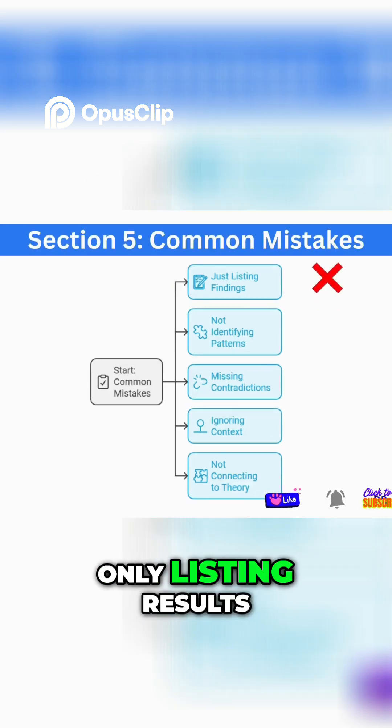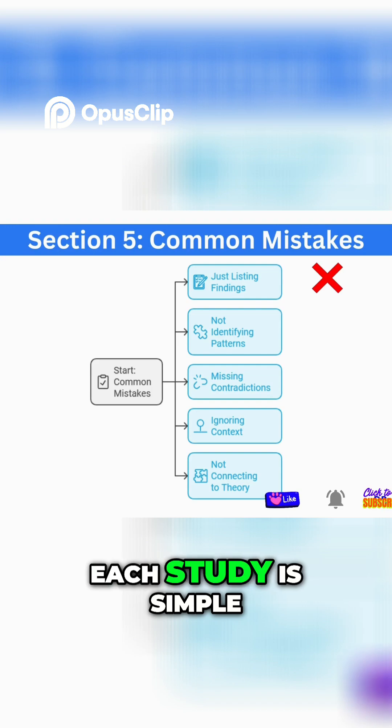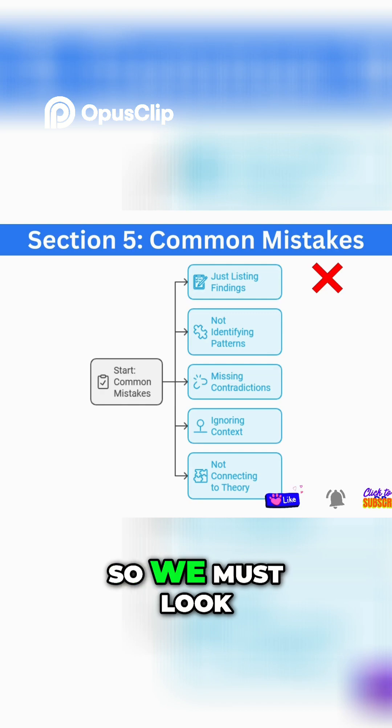First error: only listing resources. Listing the findings of each study is simple, but it doesn't help us see the broader picture, so we must look beyond the details.